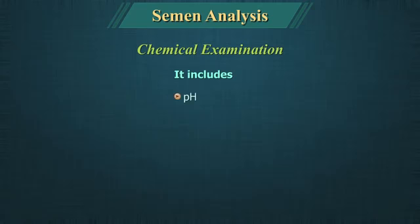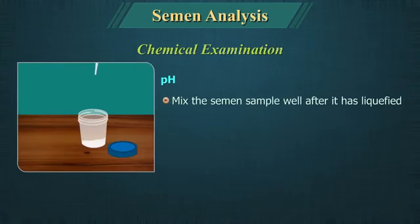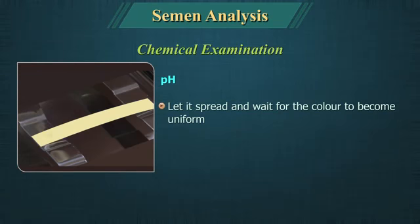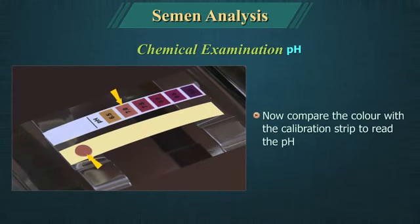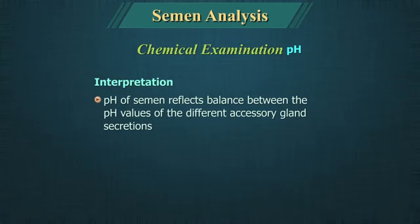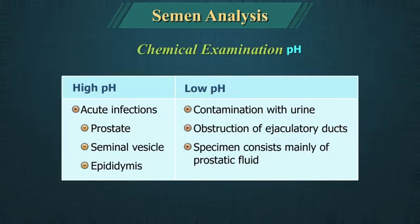Chemical examination includes pH, fructose test and occult blood. pH is checked using pH paper in the range of 6 to 10. Mix the semen sample well after it has liquefied, take a drop and place it on the pH paper, let it spread until colour becomes uniform, then compare with the calibration strip. The pH of semen reflects the balance between alkaline seminal vesicular secretion and acidic prostatic secretion. High pH values are seen in acute infections of the prostate, seminal vesicle or epididymis. Low pH may be due to contamination with urine, obstruction of ejaculatory duct, or when the specimen consists mainly of prostatic fluid.